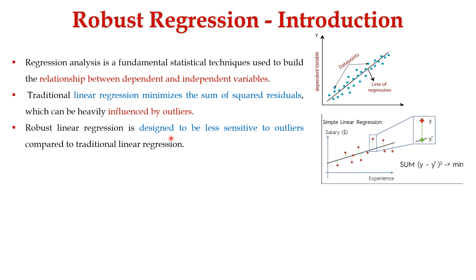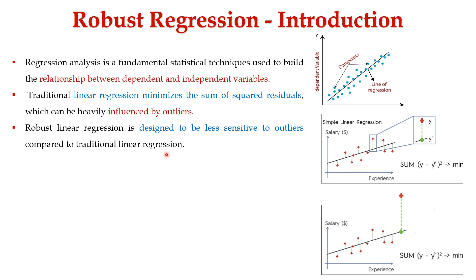Robust linear regression is designed to be less sensitive to outliers compared to traditional linear regression. In this diagram, there is an outlier — a data point that is significantly deviated from the trend of the other points. This can distort the line of regression by pulling it away from the overall trend, leading to a less accurate model as it increases the sum of squared errors — the distance between actual and predicted values.